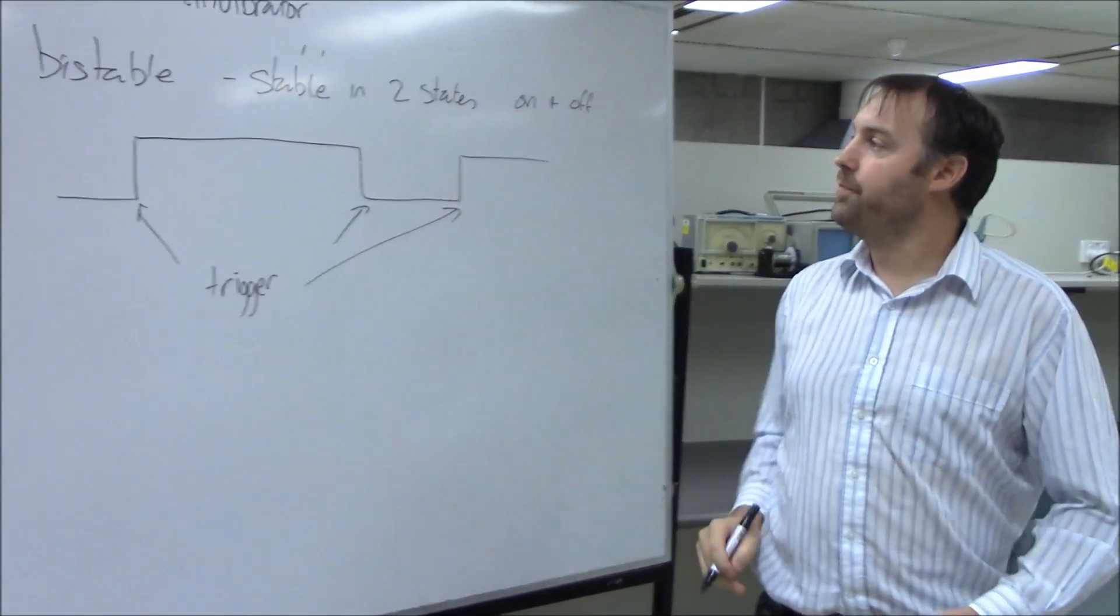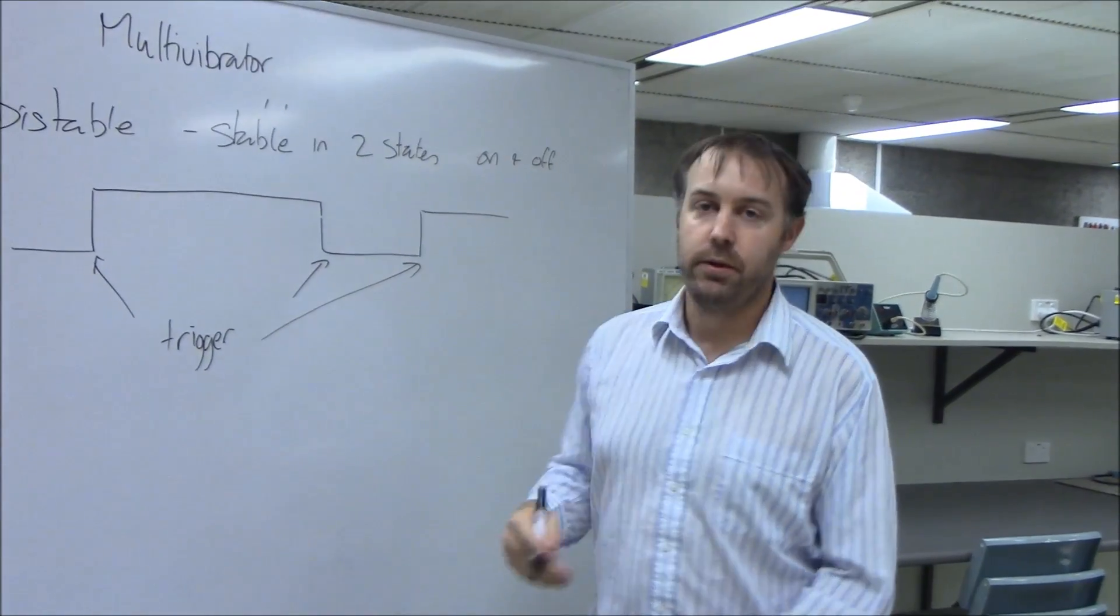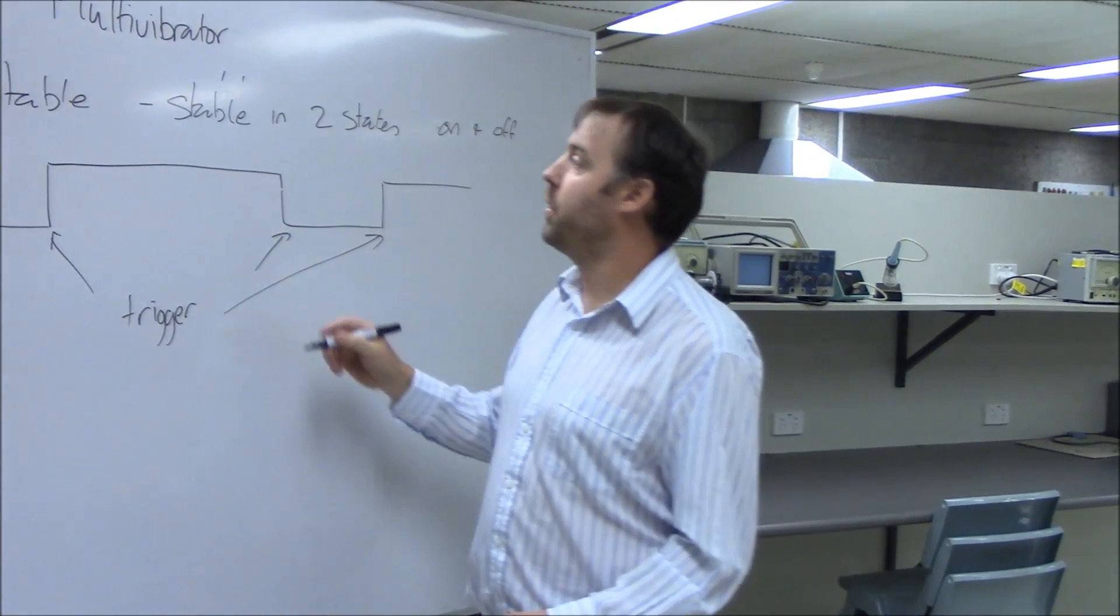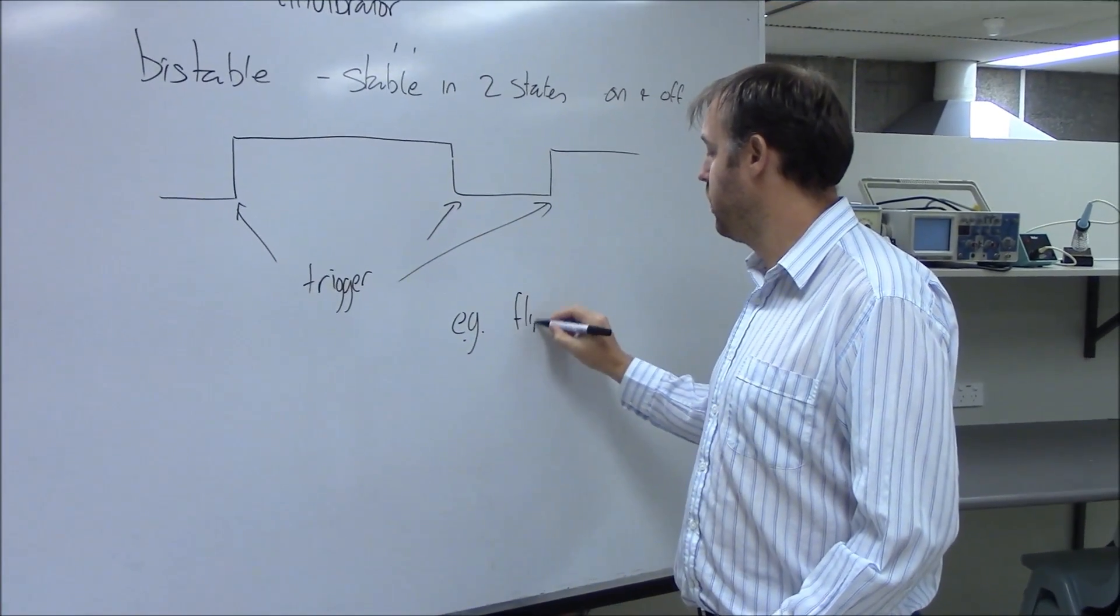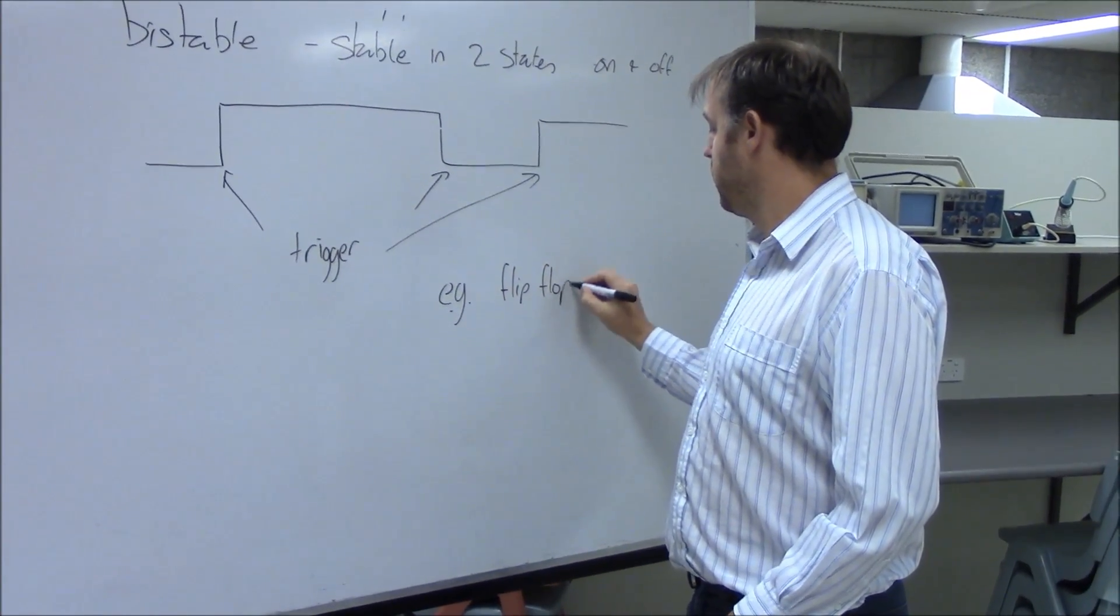So the bistable is one of the types of circuits that is a flip-flop. An example of a bistable is a flip-flop.